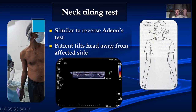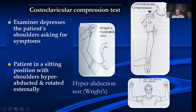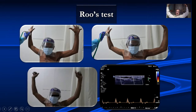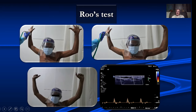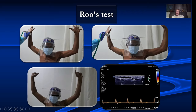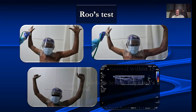There are other tests — the costoclavicular compression test, Wright's hyperabduction test, and the Roos test. In the Roos test, we ask the patient to raise the hands, hyperabduct, and move the fingers. Looking at the radial artery can be cumbersome, so commonly we look at the subclavian artery or the axillary artery to assess for changes.